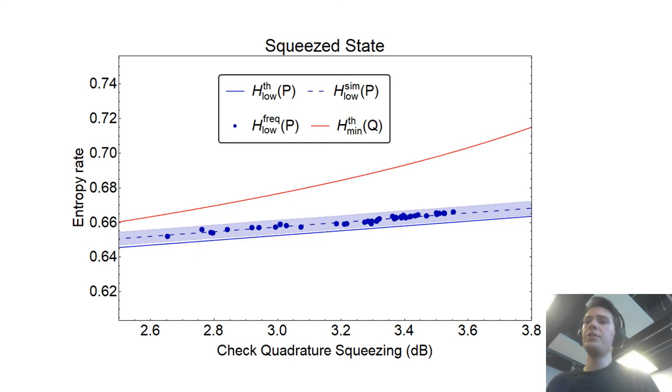And so here is a plot showing the same quantities as before and you can see that as the quadrature squeezing, the check quadrature squeezing increases, the amount of randomness that we can extract also increases and this amount is greater than for a vacuum state for example. So if you have 5 dB squeezing you can increase the amount of randomness that you would extract compared to vacuum by approximately 10%.